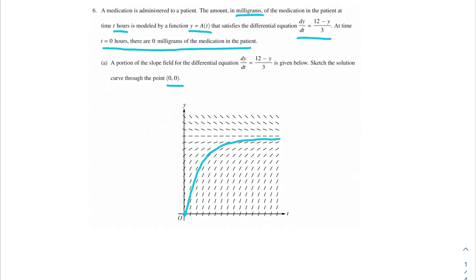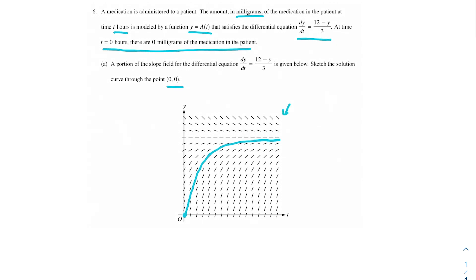Something else to point out: you might notice that above y equals 12 there are slopes there as well, so you might be tempted to sketch the rest of it. However, that would not be correct. The reason why is we are never going to reach above y equals 12 for our differential equation — there's an asymptote at that point.